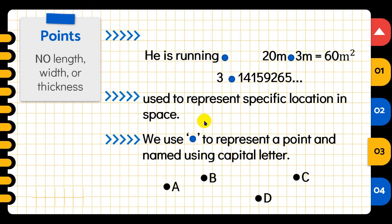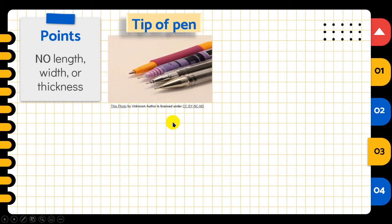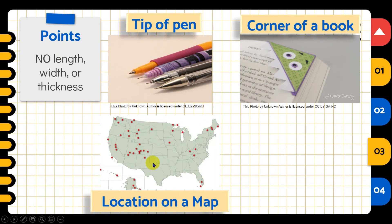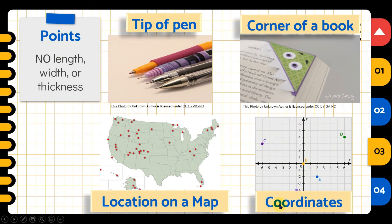Now, what are the pictorial representations of points? First example is the tip of the pen. Another is corner of a book. So when we read the word corner, that's the very edge. Again, that represents a point. Another is the location on a map. And the last is coordinates. I know you're familiar with the coordinates of a point. We have x-coordinate and y-coordinate and there are many more things around us where we can find points. You can think about it so that later in our activity, you'll know whether this thing is a point, a line, or a plane.